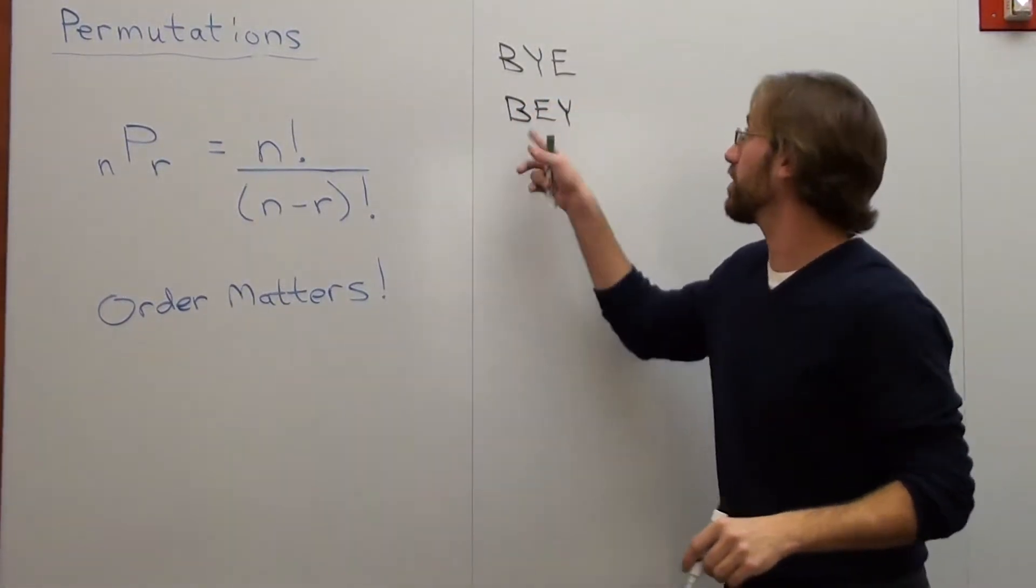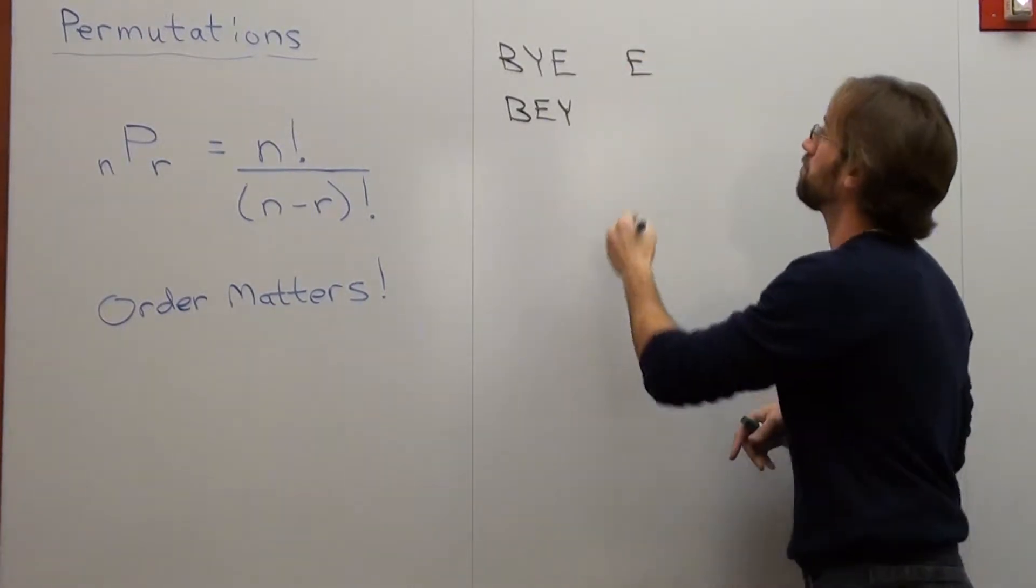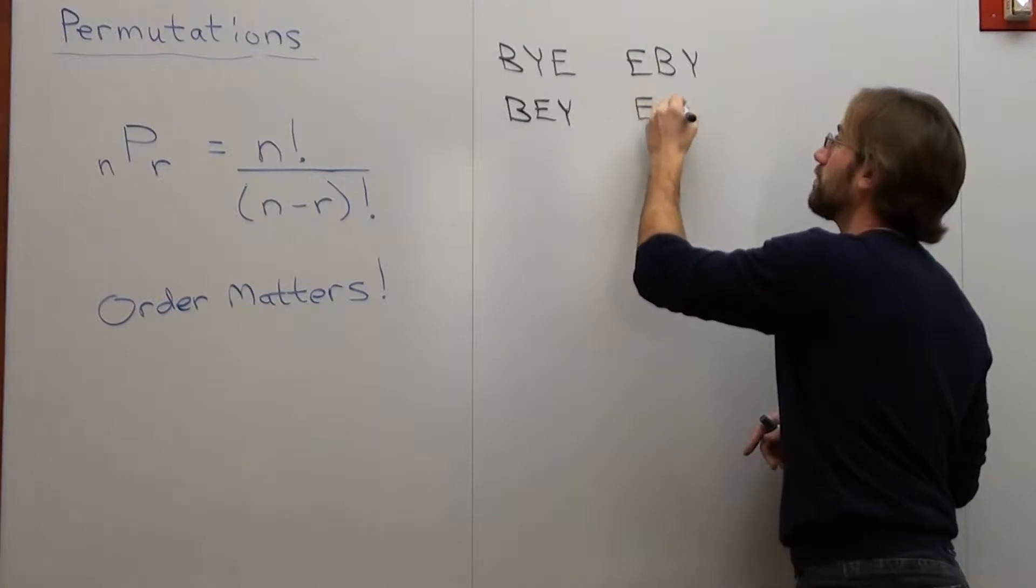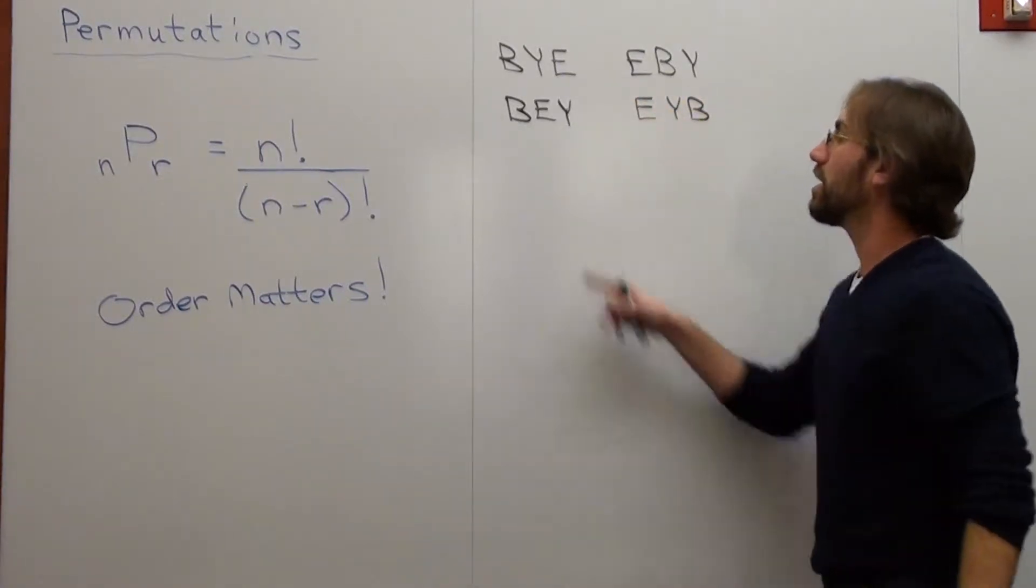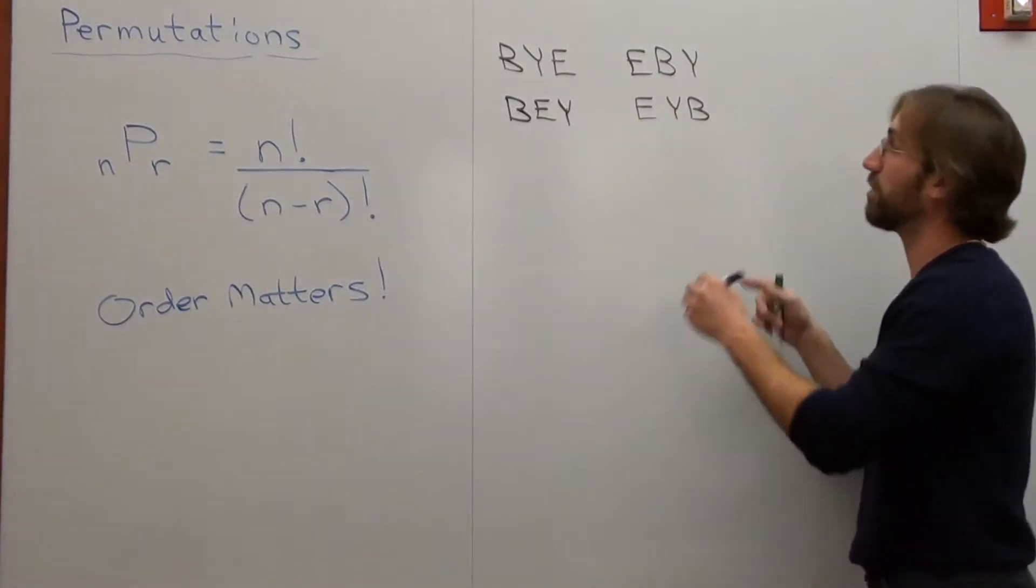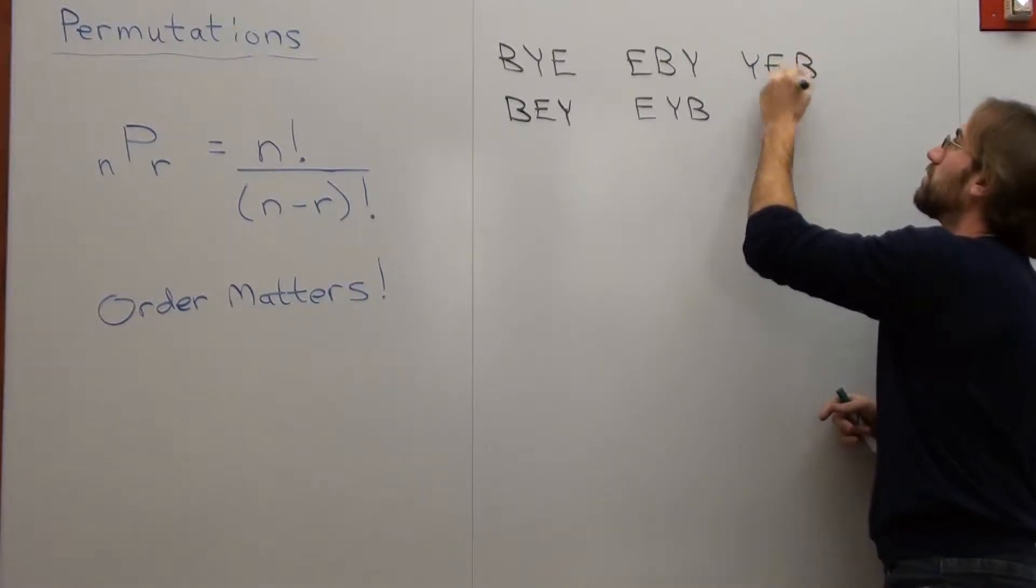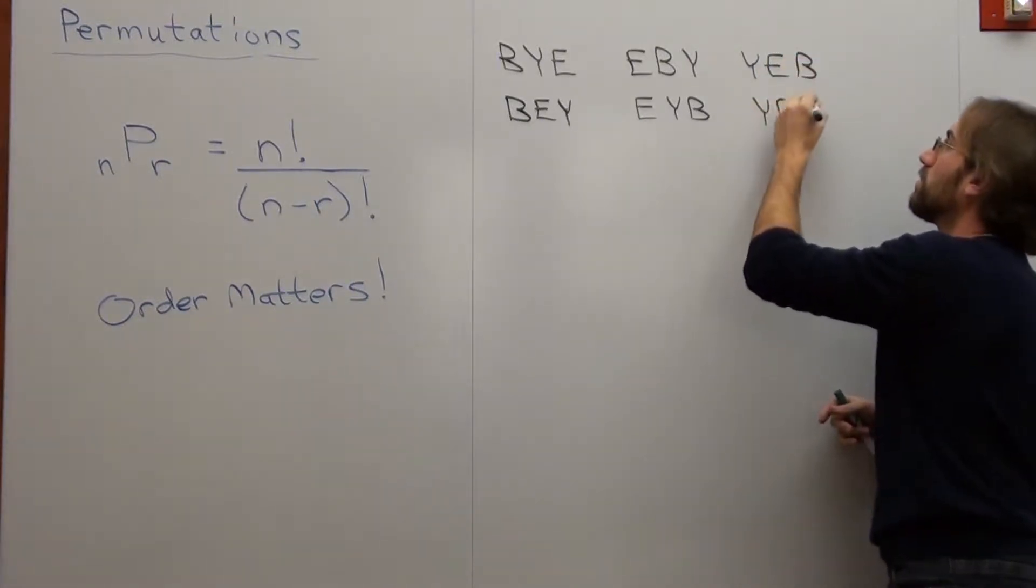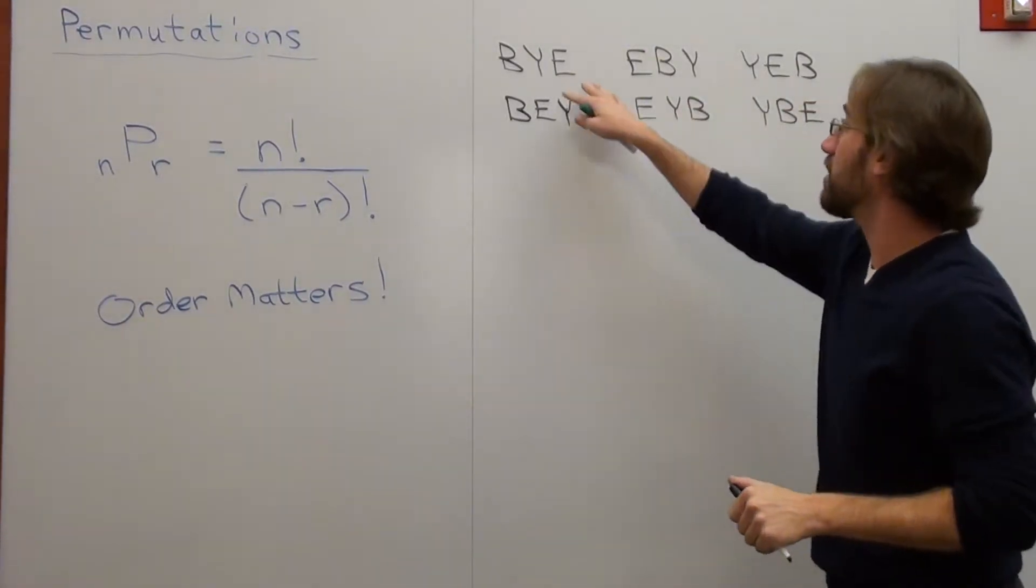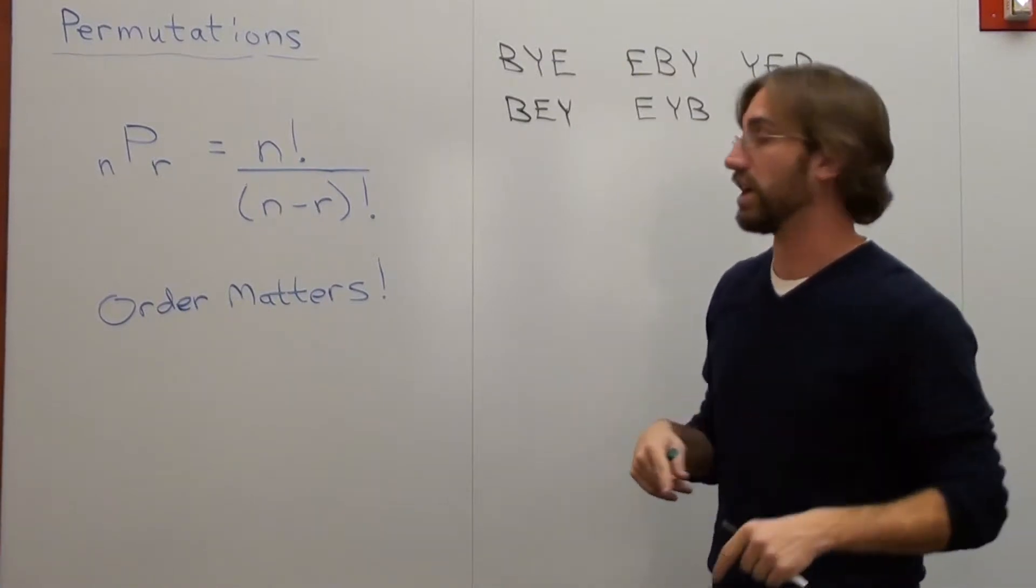That's another example of rearranging the words, but I can rearrange it some more. So I put the B first and rearrange the next two letters. I put the E first and rearrange the next two letters. Now I'm going to put the Y first and rearrange the first two letters. So I can write the word BYE six different times, but actually you can figure that out with a permutation too, and I'll show you how.